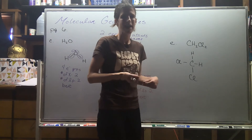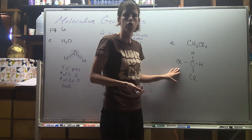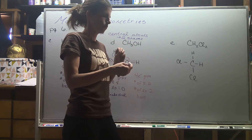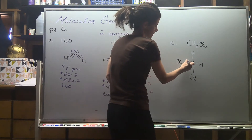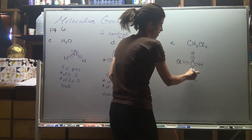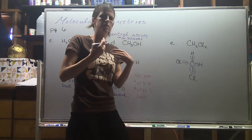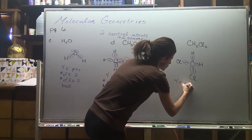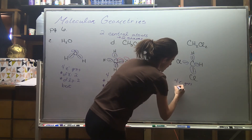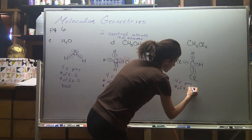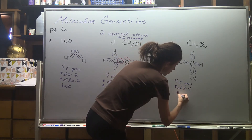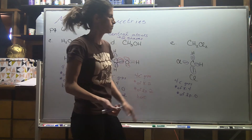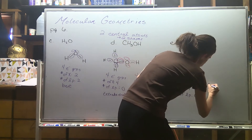As you start practicing these examples, you'll start recognizing them without going through all of the work. Here we notice four bonds attached to carbon, so four electron groups, four X's, zero lone pairs — 4-4-0, that's our classic tetrahedral molecular geometry.